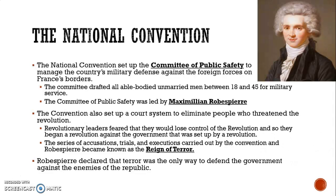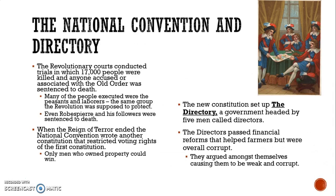The Committee of Public Safety was led by Maximilien Robespierre. The Convention set up a court system to eliminate people who threatened the revolution, which became known as the Reign of Terror — a series of accusations, trials, and executions that killed about 17,000 people. Revolutionary leaders feared losing control of the revolution. Robespierre declared that terror was the only way to defend the government against enemies of the republic. Anyone accused or associated with the old order was sentenced to death — including many of the same peasants and laborers who had started the revolution. Eventually, even Robespierre and his followers were sentenced to death.